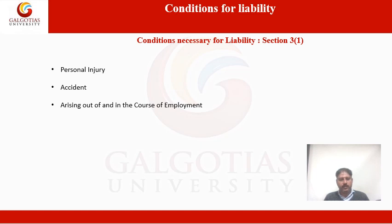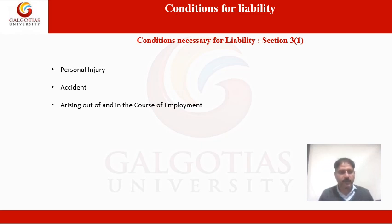The third condition is that the incident must have arisen out of and in the course of employment. The term 'arising out of' refers to a causal connection between the employment and the injury — it means employment was the cause and injury was the effect. If such causal connection is proved, we will say the injury has arisen out of employment. The term 'in the course of employment' refers to the time and place of employment — the injury should have occurred within the premises and during the period of employment, or should be very close and proximate in time and place to the employment.